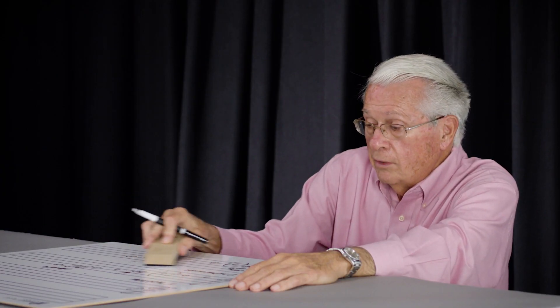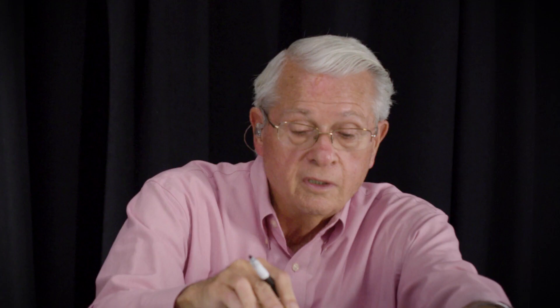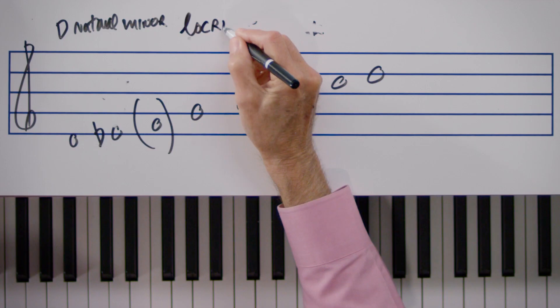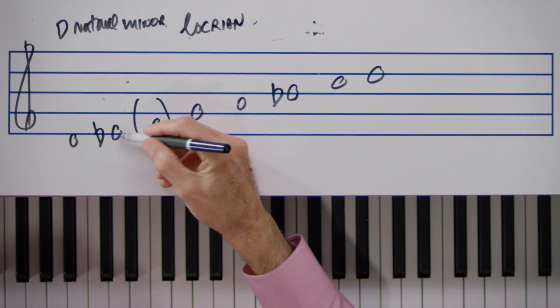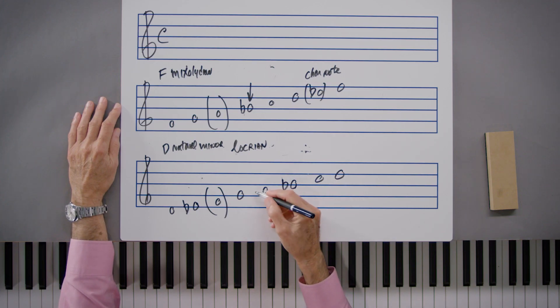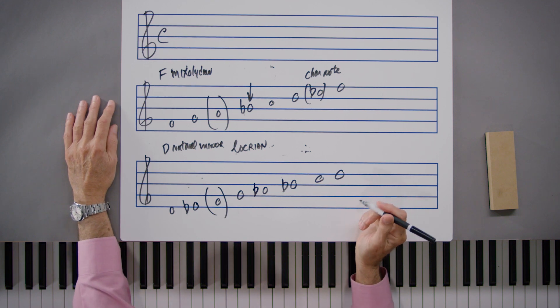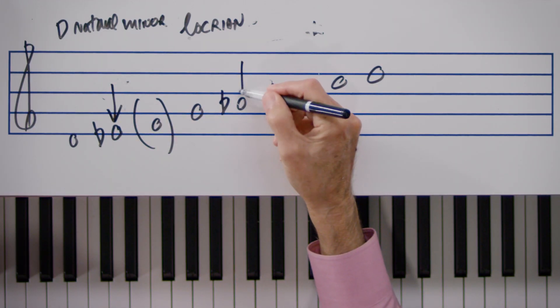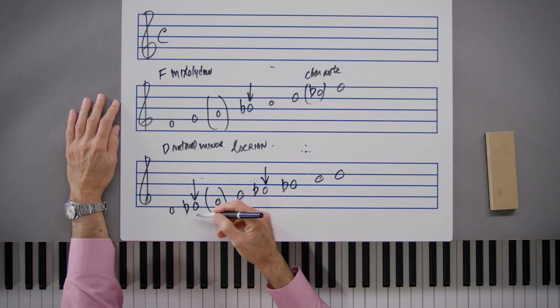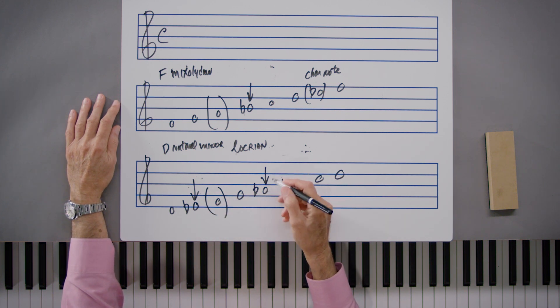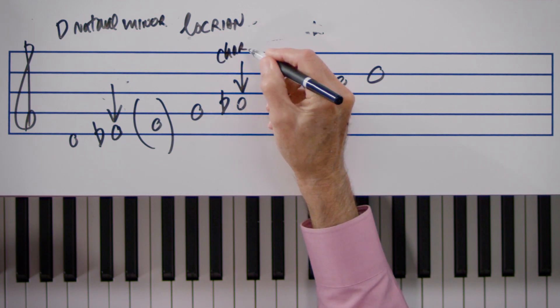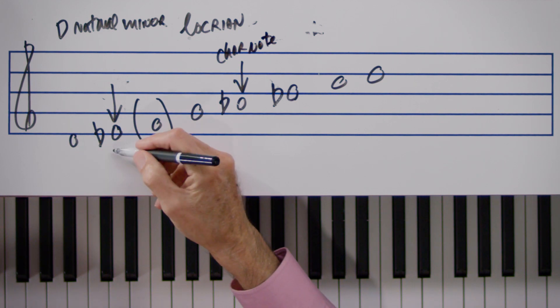One other minor mode that contains the F as the third of the scale is the Locrian scale — L-O-C-R-I-A-N. The Locrian scale keeps the flatted second scale degree but also adds the lowered fifth scale degree. So we have both the flat two and the flat five. Since the second scale degree was already lowered in Phrygian, the Locrian flatted fifth is the characteristic note, because no other kind of D minor scale is going to contain the note A flat — with the exception of the Locrian scale.